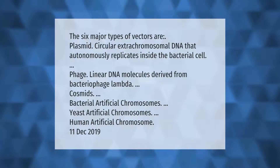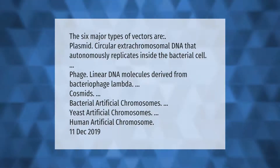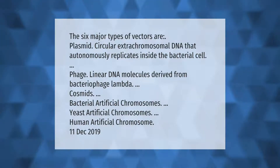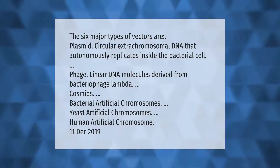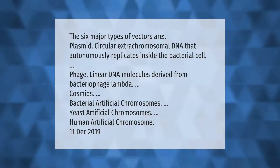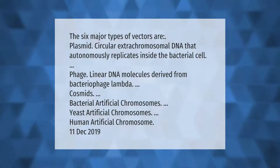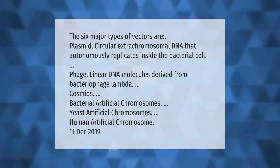The six major types of vectors are: plasmid, circular extra chromosomal DNA that autonomously replicates inside the bacterial cell; phage, linear DNA molecules derived from bacteriophage lambda; cosmids; bacterial artificial chromosomes; yeast artificial chromosomes; and human artificial chromosomes.